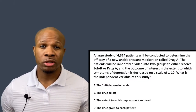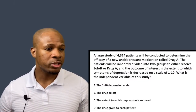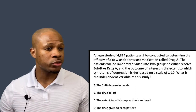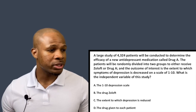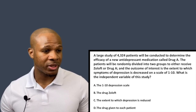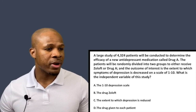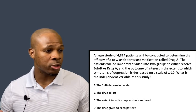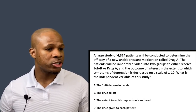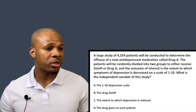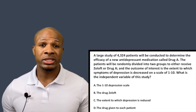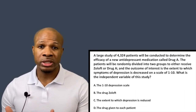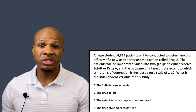Question number one: a large study of 4,324 patients will be conducted to determine the efficacy of a new antidepressant medication called Drug A. The patients will be randomly divided into two groups to either receive Zoloft or Drug A, and the outcome of interest is the extent to which symptoms of depression are decreased on a scale of one to ten. What is the independent variable of this study?